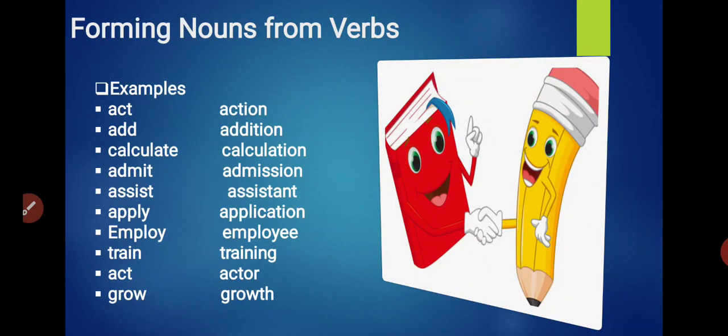Let's do this activity. Here we are making nouns from verbs. Examples: Act becomes Action. Add becomes Addition. Calculate becomes Calculation. Admit becomes Admission. Assist becomes Assistant. Apply becomes Application. Employ becomes Employee. Train becomes Training. Grow becomes Growth. Yes, it's very simple.